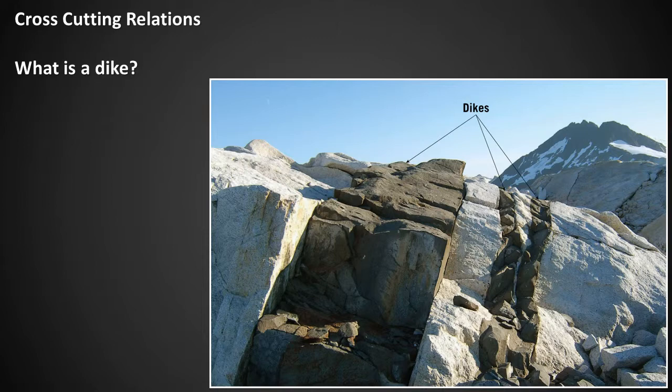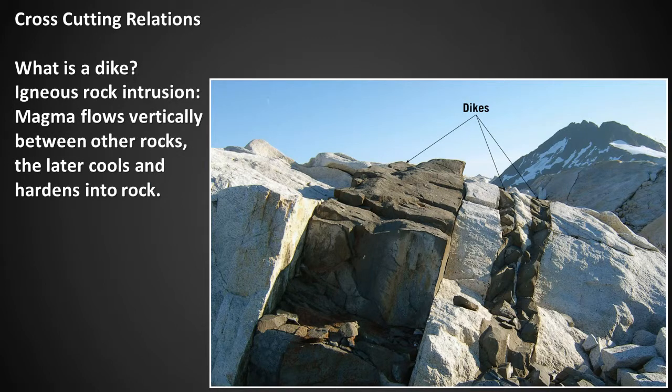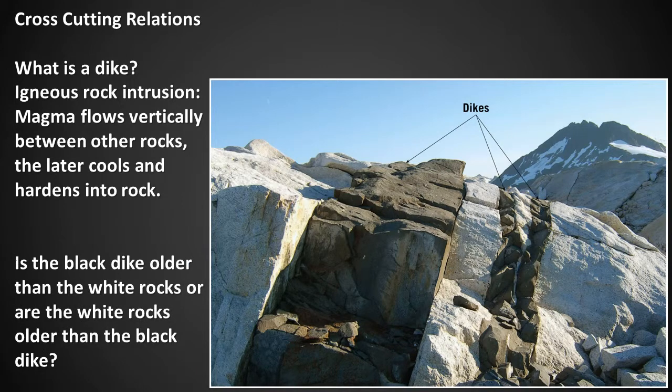Cross-cutting relations. What is a dike? A dike is an igneous rock intrusion — magma flows vertically between other rocks, then later cools and hardens into rock. Is the black dike older than the white rocks, or are the white rocks older than the black dike? That's right — the dike is younger than the rocks since the rocks had to exist before the magma could intrude into them.